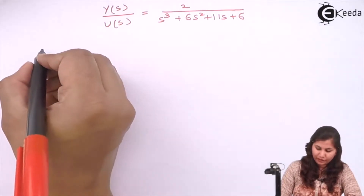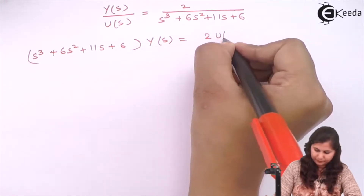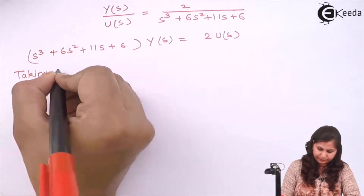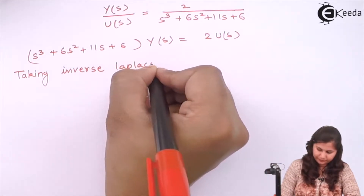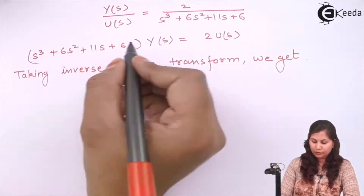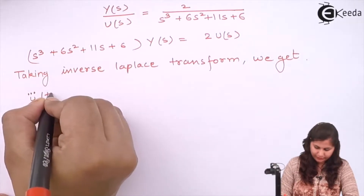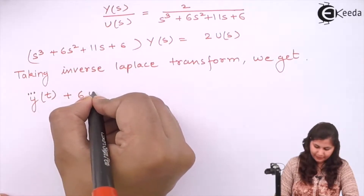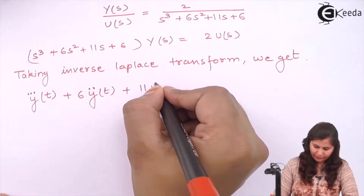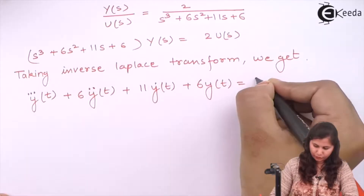Cross multiplying and taking the inverse Laplace transform of both sides of the equation, we will get: since s³ corresponds to third differentiation of y, we can write it as y‴(t) + 6y″(t) + 11y′(t) + 6y(t) = 2u(t). So this is the differential equation representing the system.